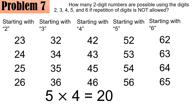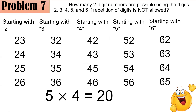Another way: there are two slots — one for the tens place and one for the ones place. Since you have five options for the tens place, that's five. But if you use one digit there, you cannot reuse it, so only four options remain for the ones place. By the fundamental counting principle, five times four equals 20. There are 20 two-digit numbers. Congratulations if you got this right — keep up the good work.